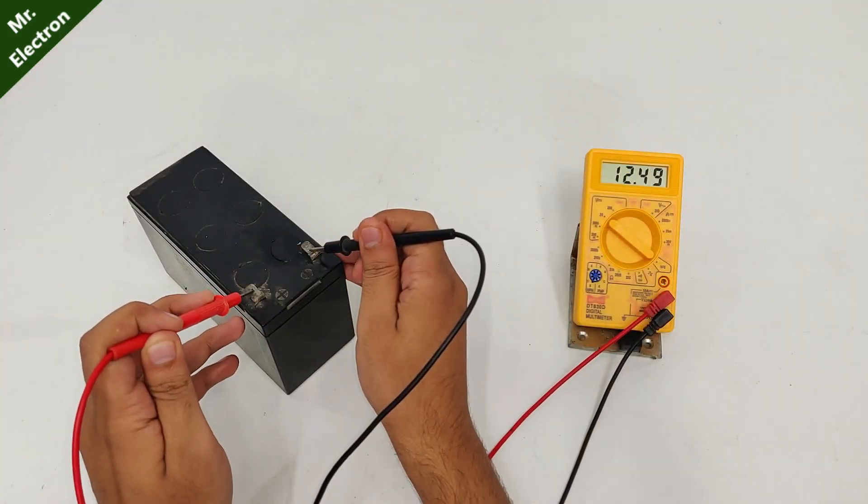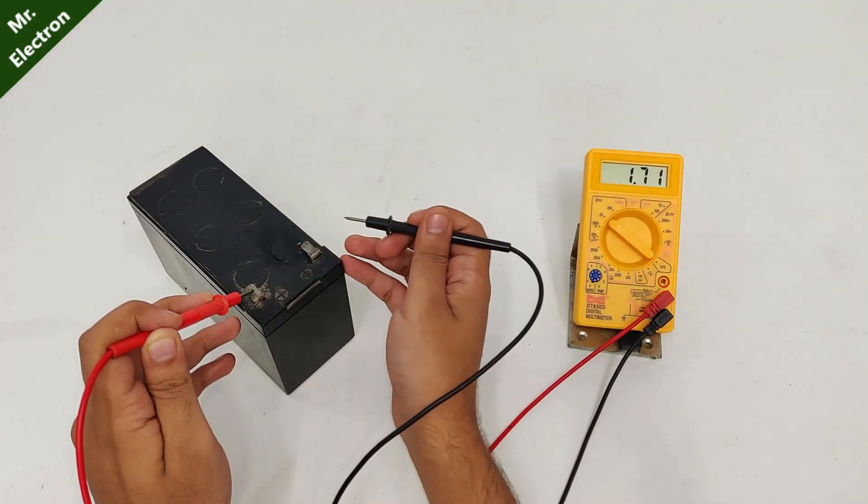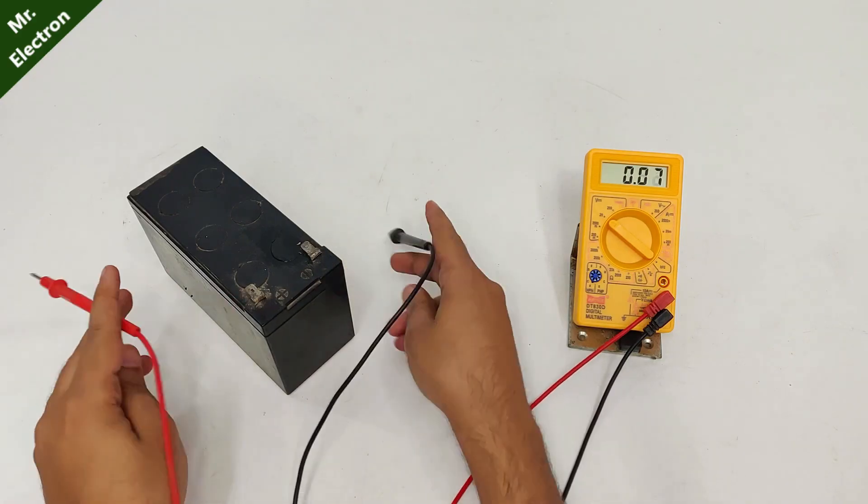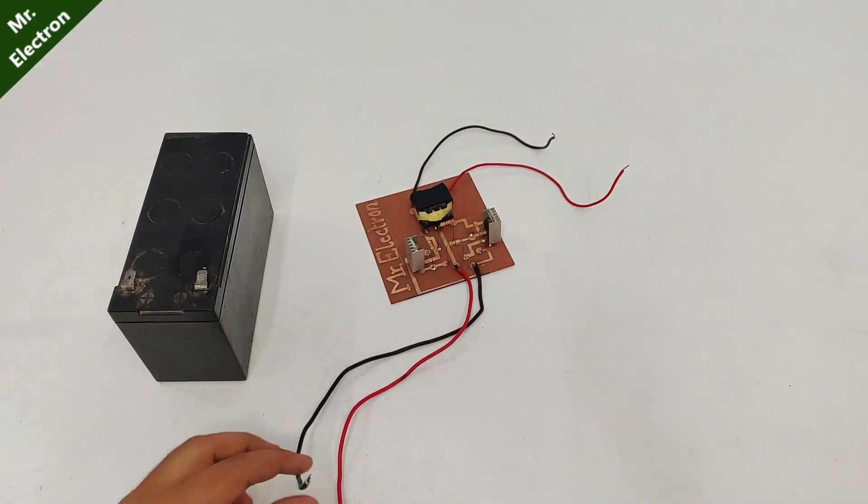After some time you can see the new battery voltage is 12.5 volts, so let's do the test again with a 100 watts bulb.